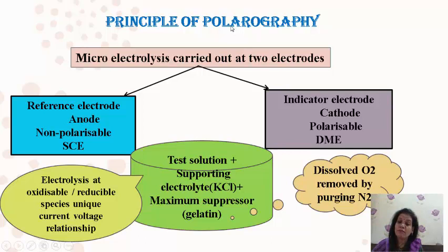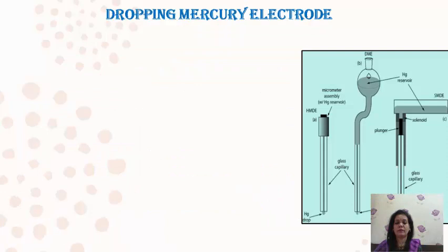If dissolved oxygen is present, it definitely interferes during our study. So we must take the precaution of removing dissolved oxygen by purging N2 gas — bubbling nitrogen gas through the solution before estimation.